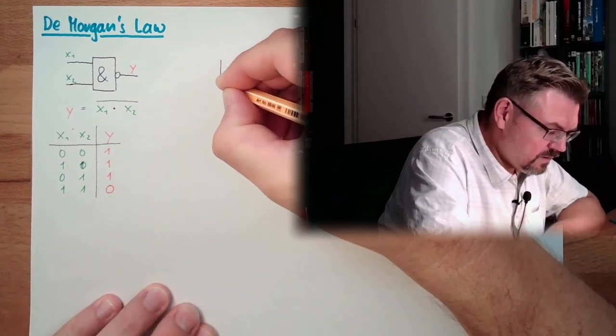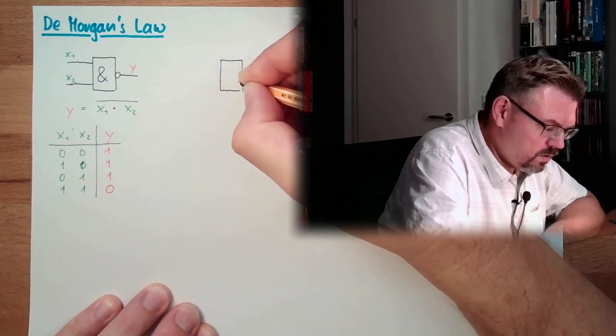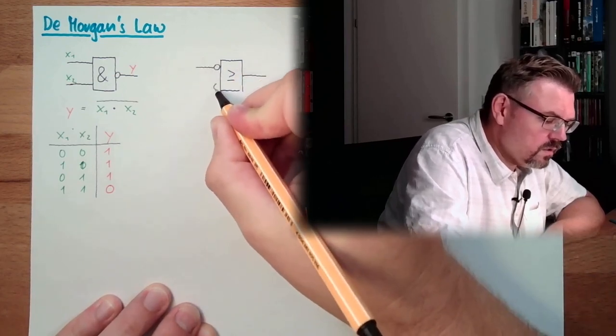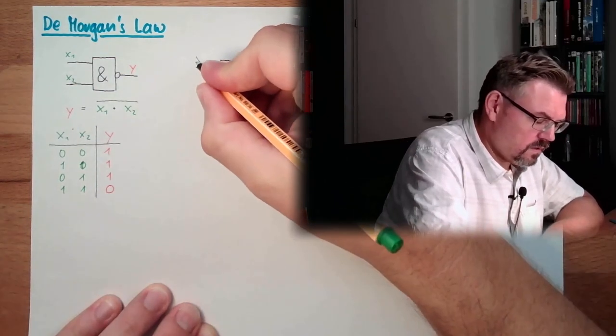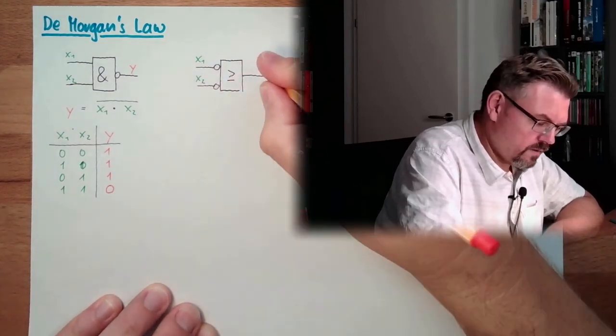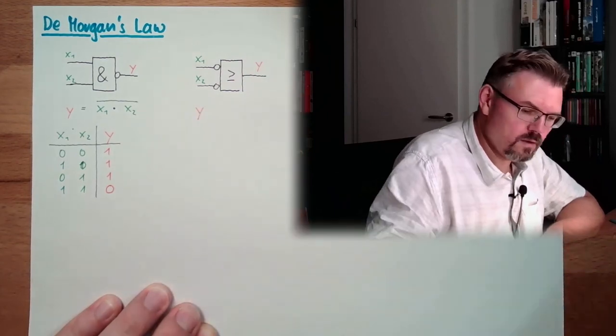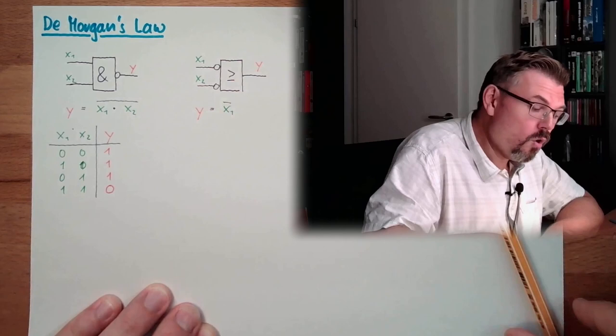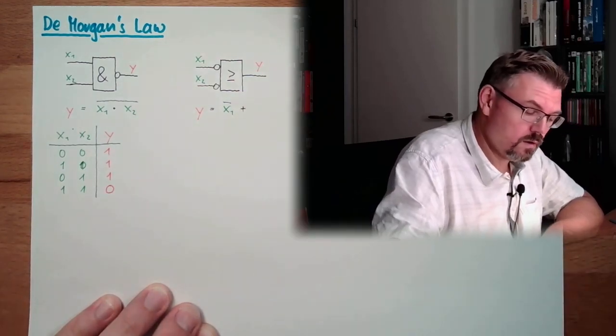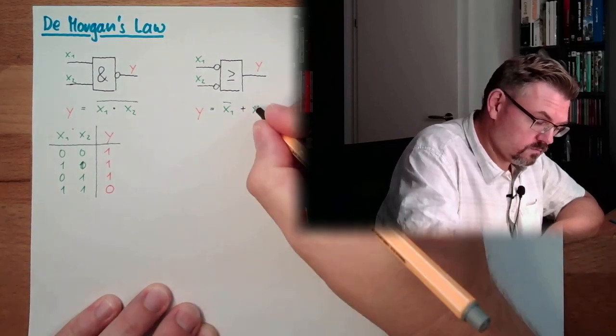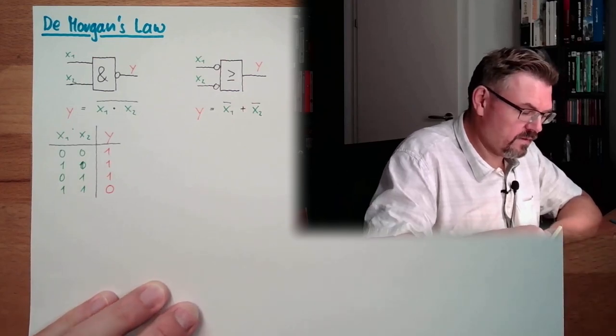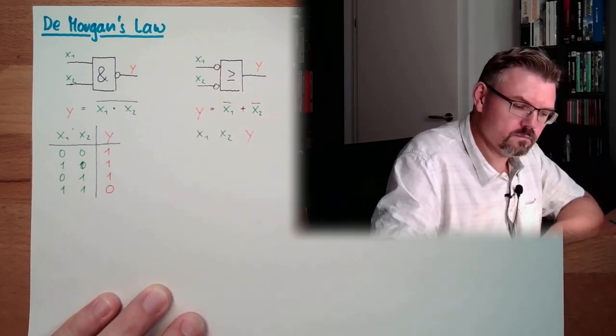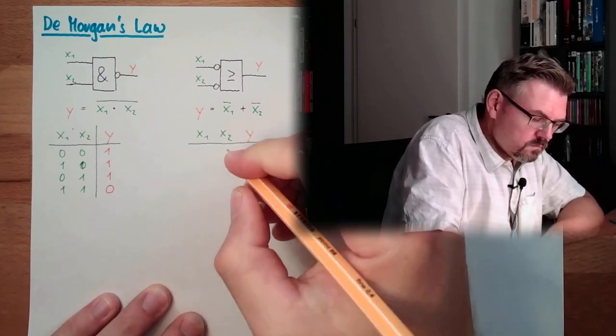Now, let's have a look on another element. And this time, I am going to draw an OR and this time I am going to NOT the inputs. x1, x2, y. So actually, y equals NOT x1 or NOT x2. Let's write down again the table of truth. x1, x2, y.